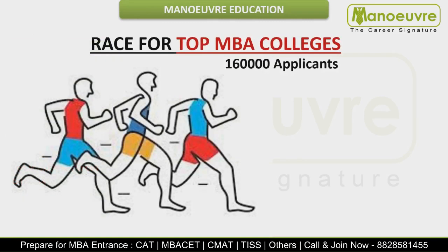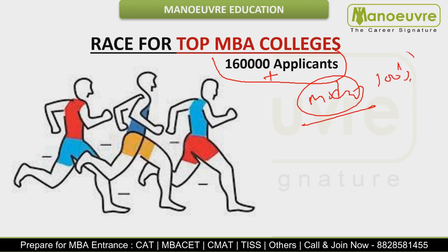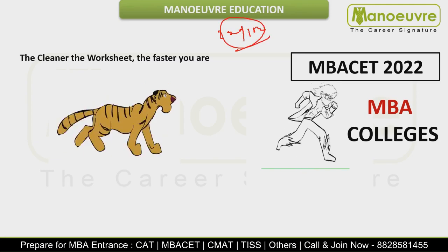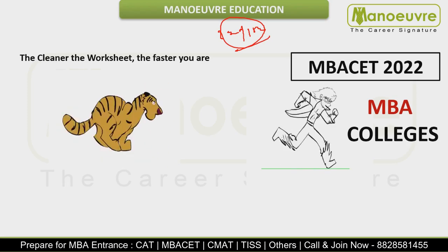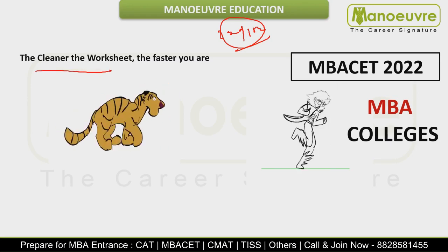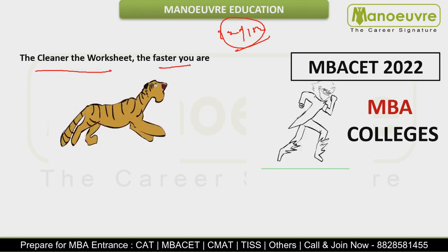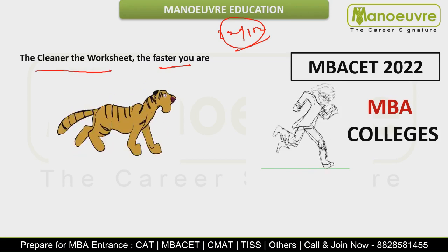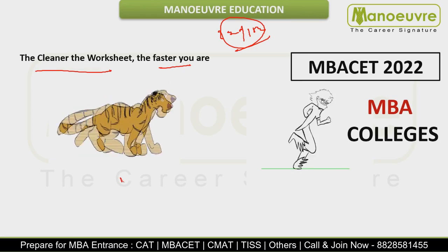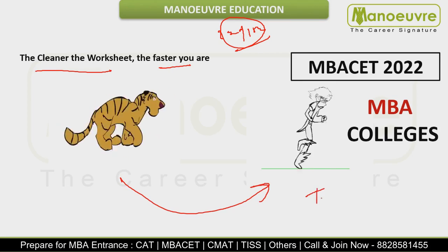The competition is 1,60,000+ applicants who will be writing. So don't worry — the paper will be moderate. Whatever you have studied, give 100%. Definitely you will be hitting a good score in CET 2022. We will be getting 200 questions to solve in 150 minutes, so it's not possible to attempt all questions — 15–20 questions you will have to do with smart guessing. Minimize rough work: the cleaner the worksheet, the faster you are. If you are stuck on a question, directly jump to the next question — don't waste your time, there is very little time in CET. Think like a tiger is running behind you — you have to keep running in CET because you don't have time.